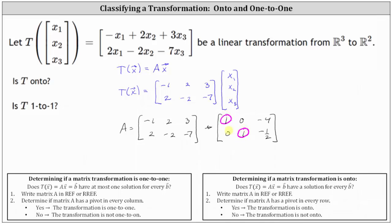We do not have pivots in every column, and therefore the transformation is not one-to-one. However, we do have pivots in every row, and therefore the transformation is onto. So is the transformation onto? Yes. Is the transformation one-to-one? No.